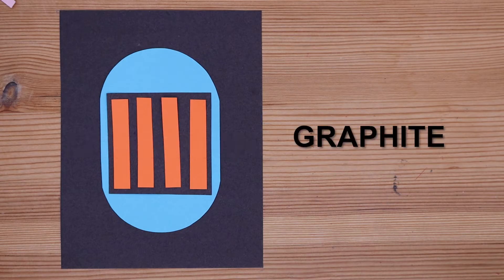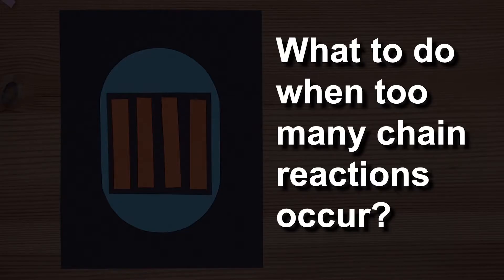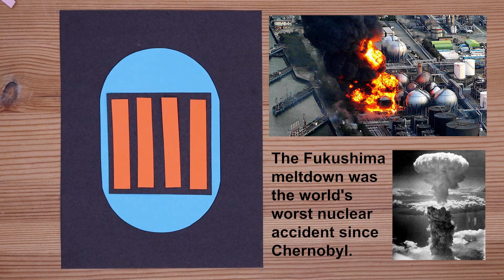We need a moderator to slow the neutrons down so that they can easily be absorbed. We can use graphite as a moderator. What if there are too many chain reactions going on? Too much fission can lead to overheating of the reactor.